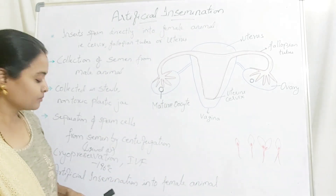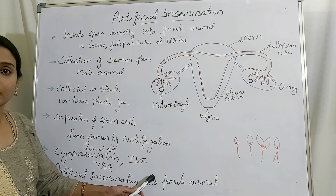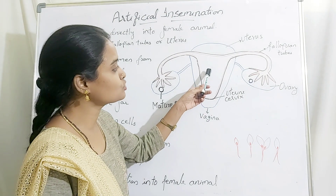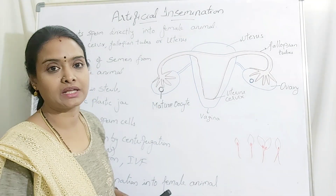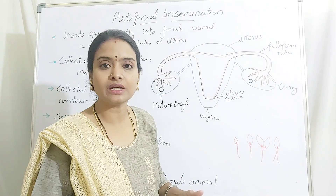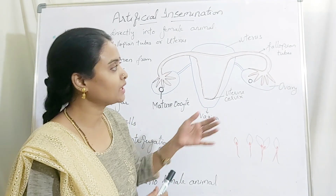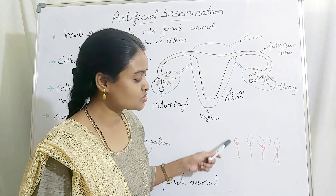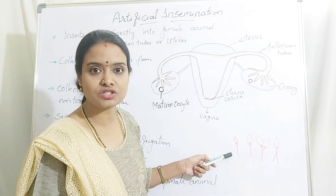Artificial insemination is performed in the female by artificially introducing the separated sperm cells. In some cases, male sterility or infertility is observed in the male animal. The sperm cell consists of a head and a tail region.